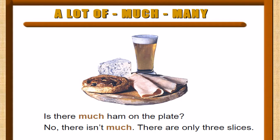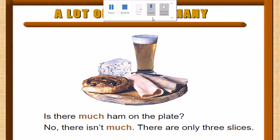Today we're going to talk about 'a lot of,' 'much,' and 'many.' We know that we have countable nouns and uncountable nouns. Countable nouns are things you can count, like books or girls. Can you give me another example? Like a chair — excellent! And we have uncountable nouns like air and time.